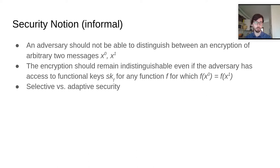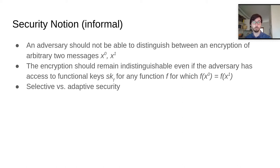With this limitation that he or she can ask only for functional encryption keys for functions that do not distinguish messages itself, so only for functions f such that f of x0 is equal to f of x1. There is a slight difference between selective and adaptive security, where adaptive security is a bit stricter, demanding that the adversary cannot submit messages x0, x1, even after observing the public parameters and public keys.